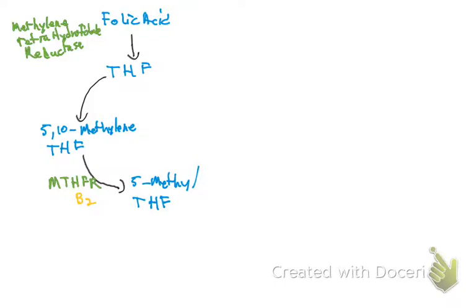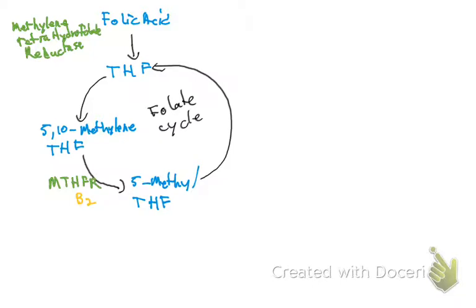Once you have your 5-methyl tetrahydrofolate, it needs to come back to tetrahydrofolate. On the way back, there is another enzyme involved. This enzyme joins the other cycle — the methionine cycle — because the folate cycle needs to connect with the methionine cycle.